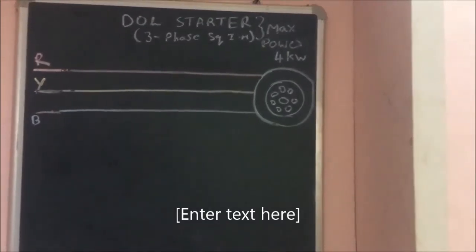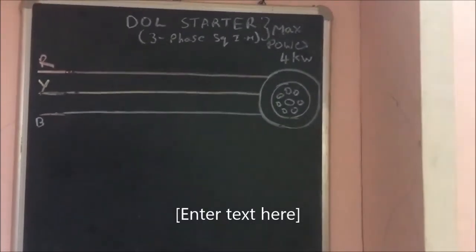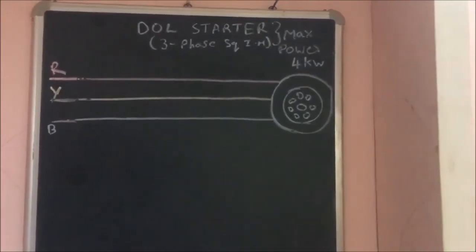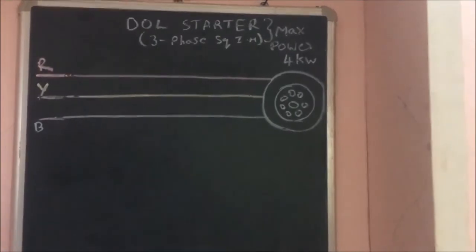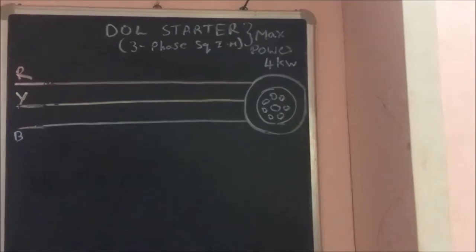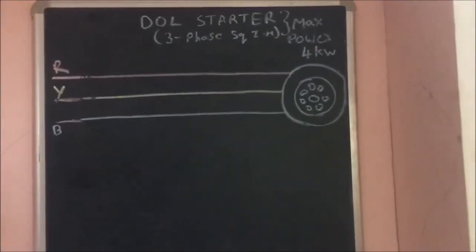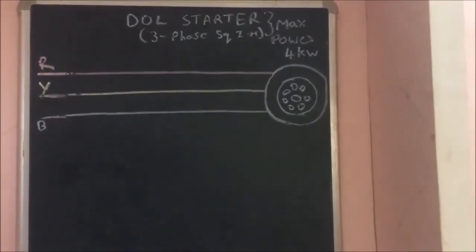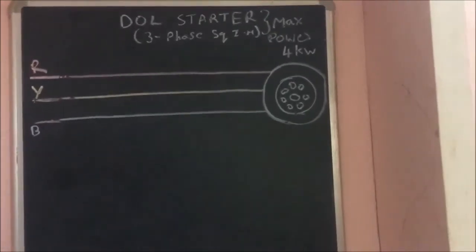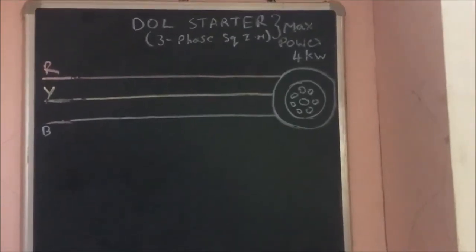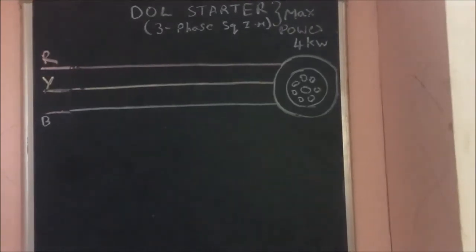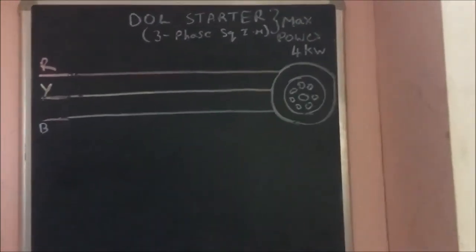In this class we are going to see about the direct online starter, by drawing as well as understanding the concept. Normally the direct online starter is used for three-phase squirrel cage induction motors of low power rating up to 4 kilowatt. Because at starting time the back EMF is zero, therefore the starting current is 2 to 5 times the rated current, and therefore heat loss I²R will be more, and power losses also increase.